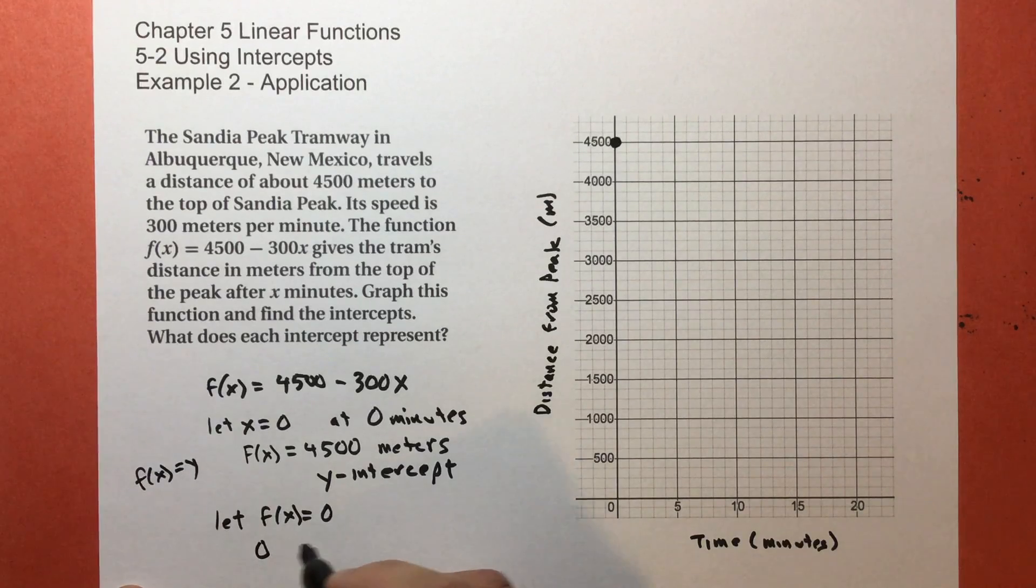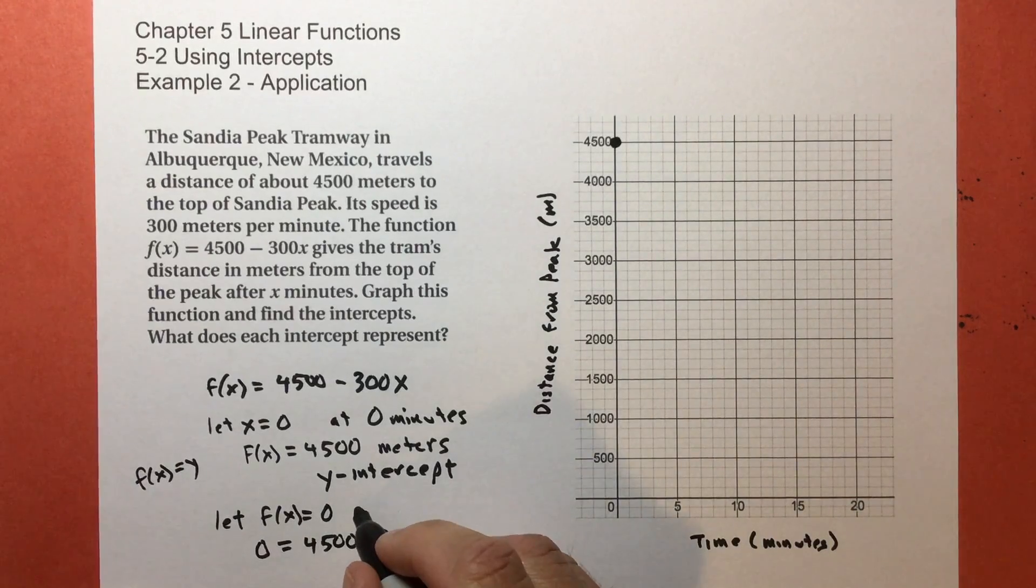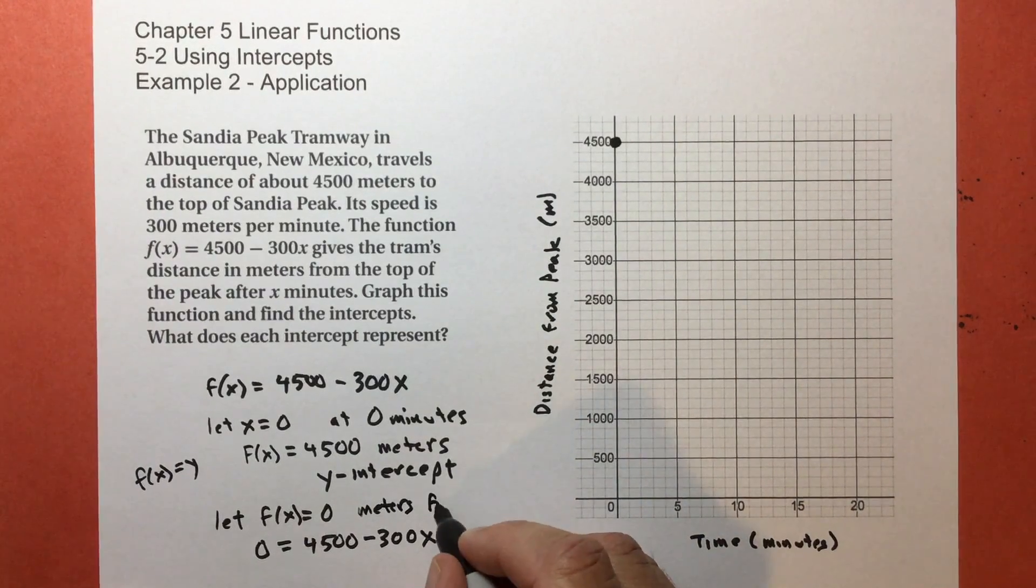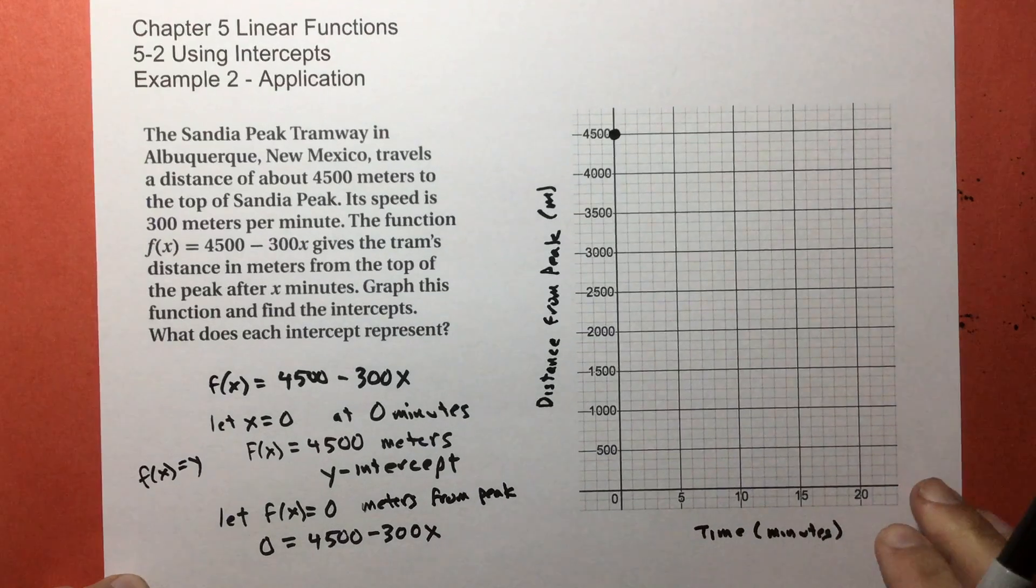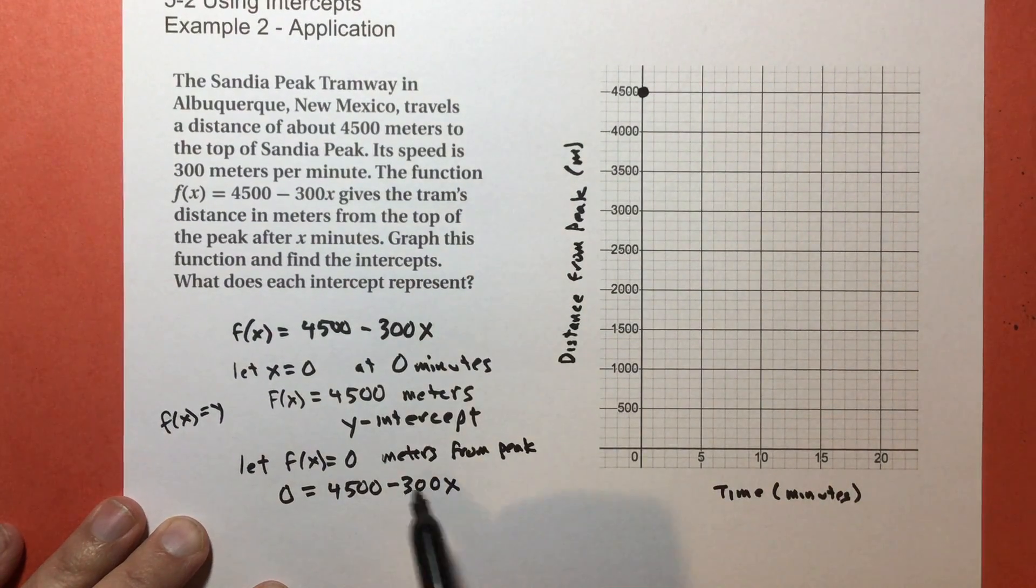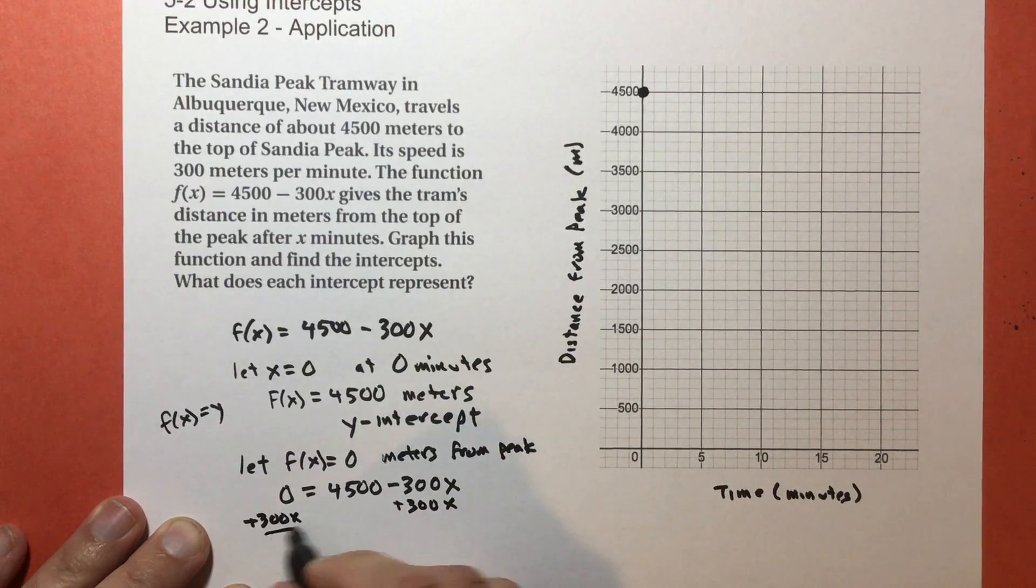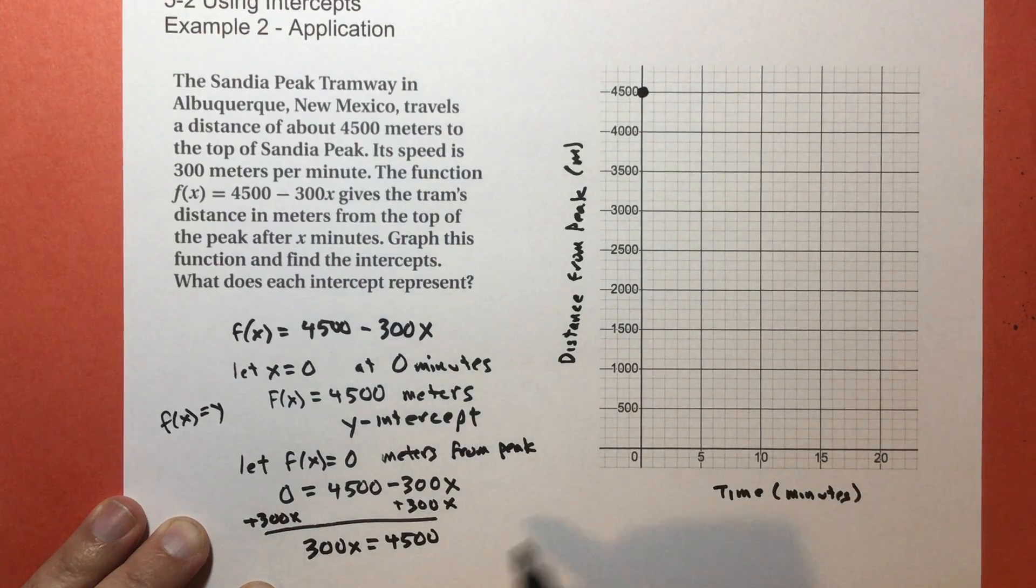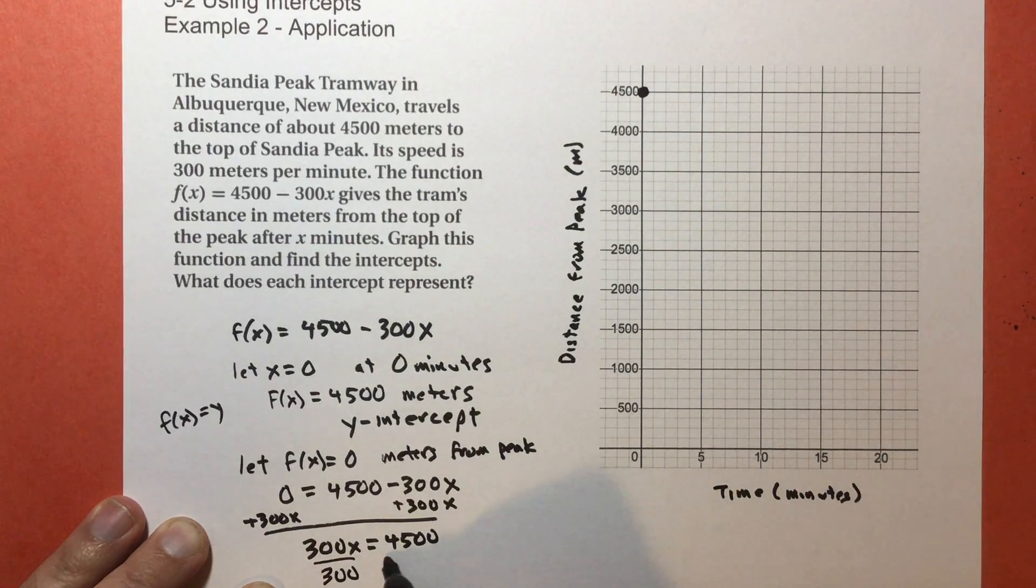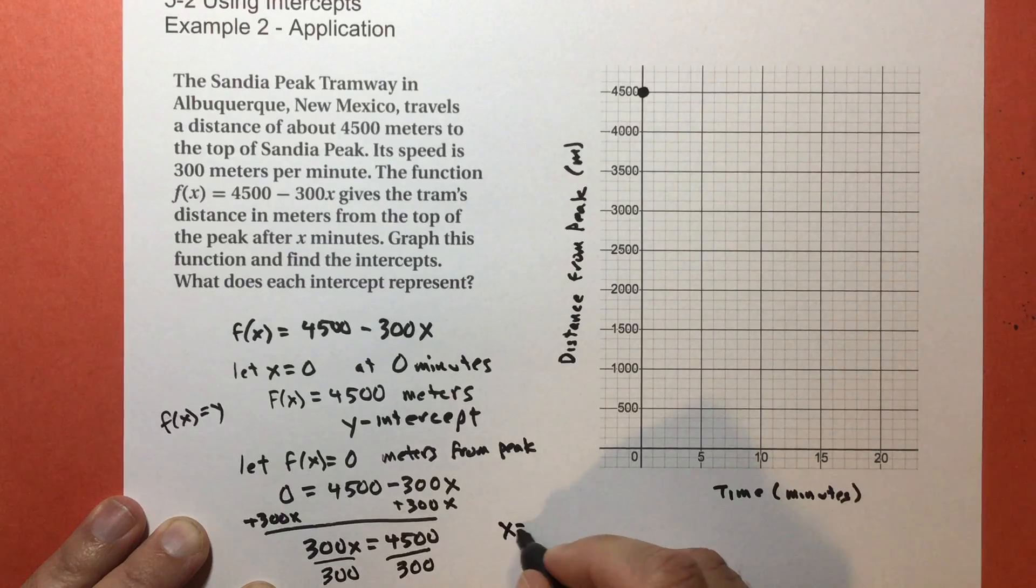So what happens here? So I get zero equals 4500 subtract 300x. And by the way, this is zero meters from the peak. So I got to solve this a little bit. I'm going to add 300x to both sides. And I get 300x equals 4500. Divide both sides by 300, and this gives me x equals 15.